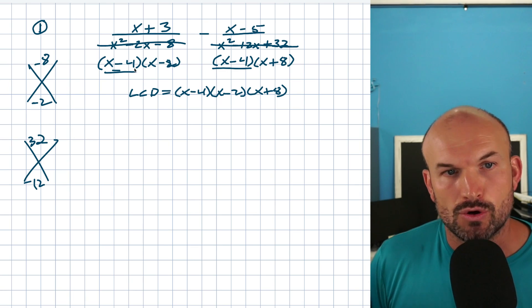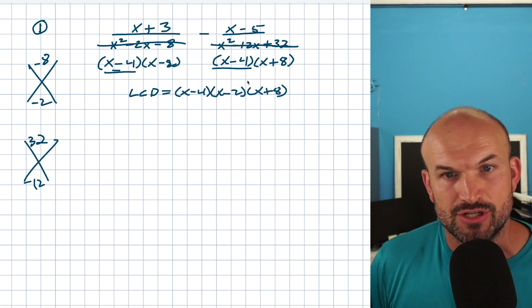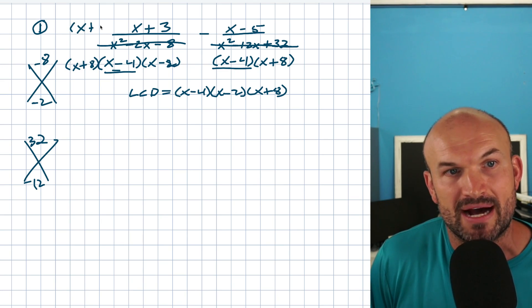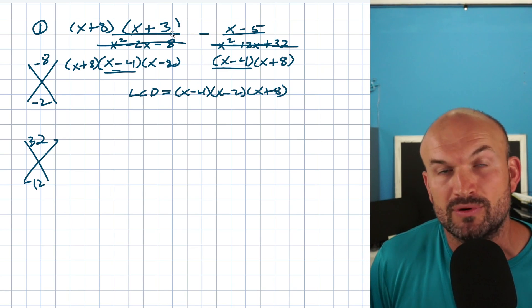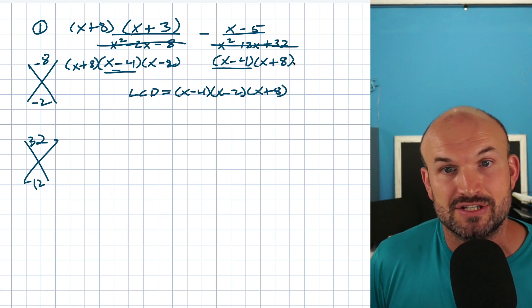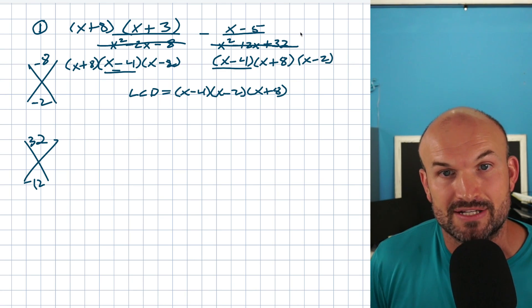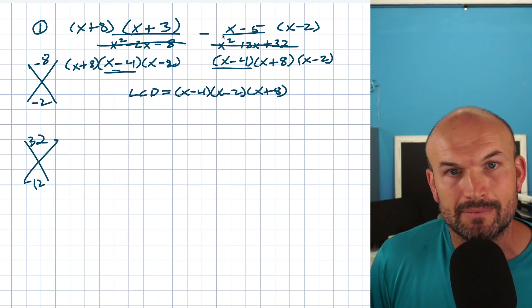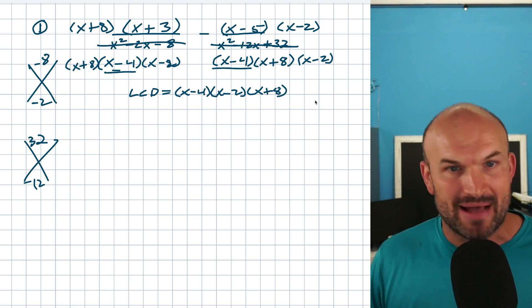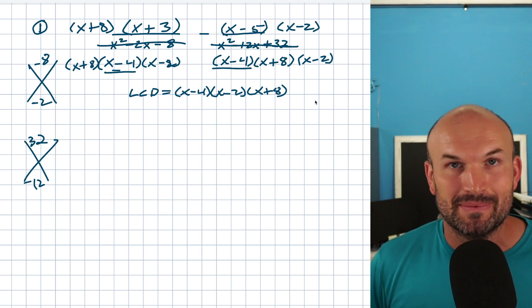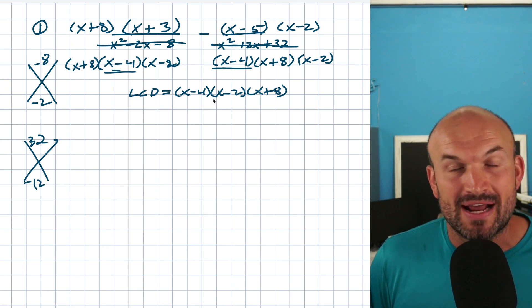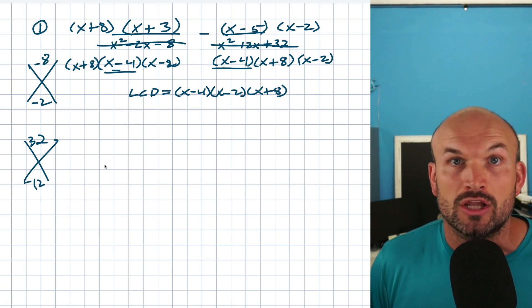My LCD is going to contain (x - 4), but it also has to contain (x - 2) and (x + 8). This is what I need to obtain for both fractions. Over here I have (x - 4)(x - 2), so I just need to multiply by (x + 8) — on the top as well as on the bottom. On the numerator I have an expression, so I'm going to put that in parentheses. On the right-hand side, I have (x - 4)(x + 8) but I do not have (x - 2), so I'm going to multiply by (x - 2) on top and on the bottom. Now that I've obtained a common denominator, I can just write that as my denominator and write these two expressions in the numerator.